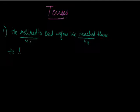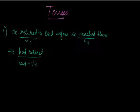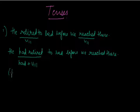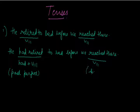The past perfect form uses had plus V3. So: he had retired to bed, because this task was performed first — he retired to bed first, and then we reached there. The corrected sentence is: He had retired to bed before we reached there. When two activities occur in a sentence, the one completed first takes past perfect form, and the one completed later takes simple past form — a combination of past perfect and simple past.